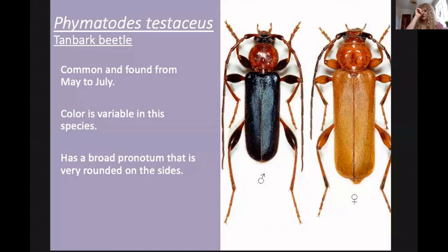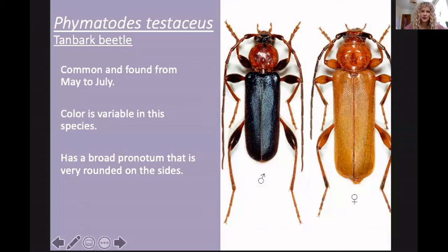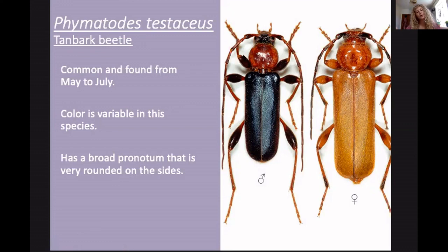Phymatodes testaceus, the tawny bark beetle, looks like a big brute — really hefty, like it's been to the gym. Both male and female have really bulbous pronotums and bulbous femurs — knobbly legs. They have two colour forms to remember. Bulbous pronotum and really enlarged femurs are the key characters.